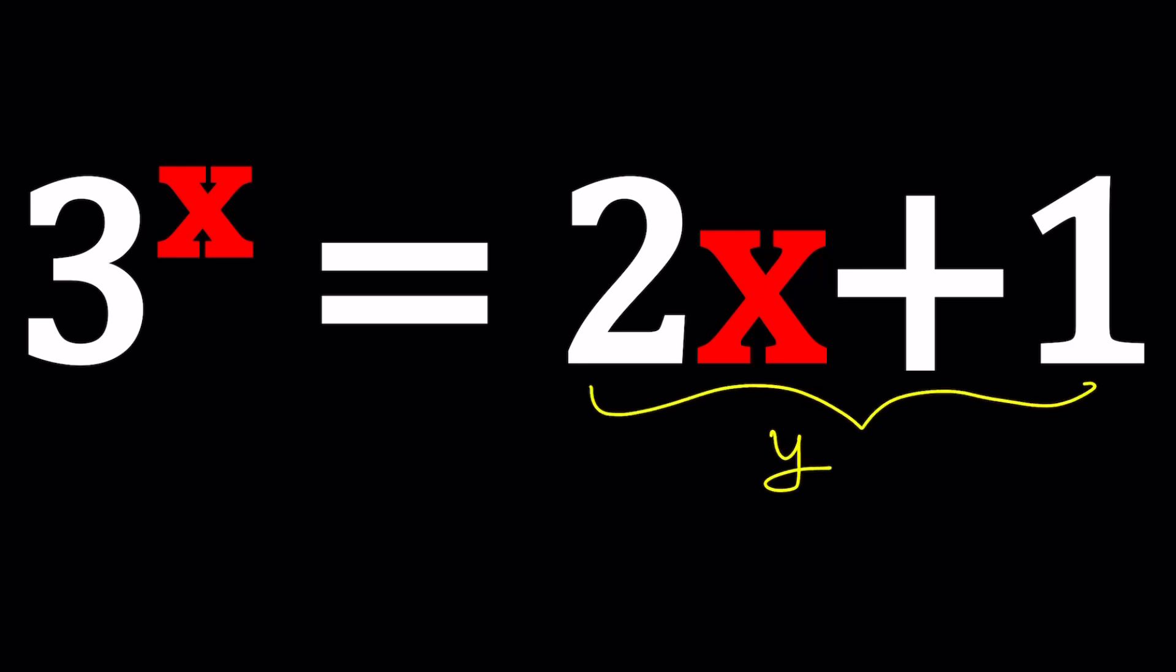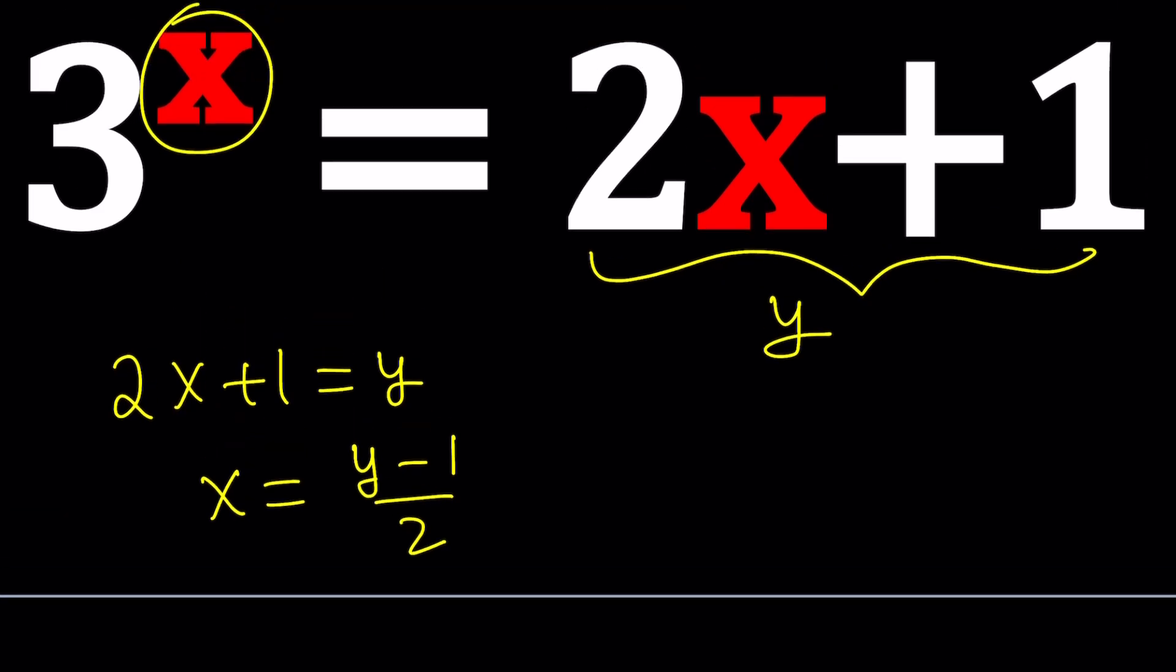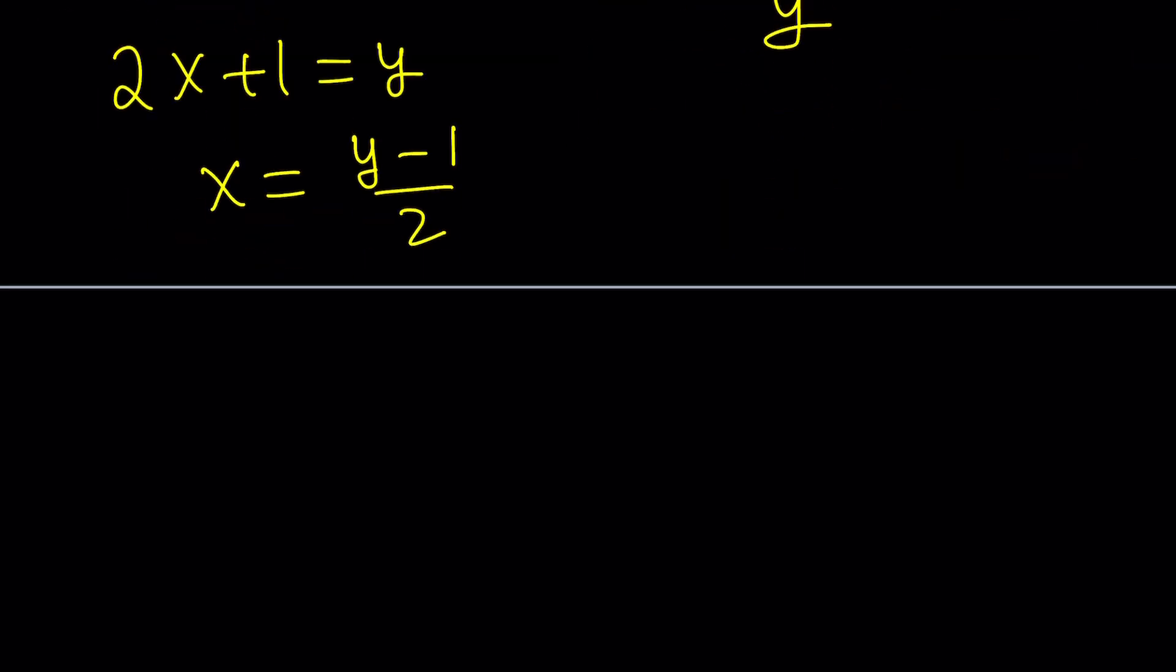But I'm going to go ahead and call this whole thing y, and don't ask why. From here, we get the following: 2x plus 1 equals y, which implies x equals y minus 1 over 2. So if you solve for x from this equation, these are also called literal equations, kind of like solving a formula for one of the variables. So now we can go ahead and plug that in here on the left, and that gives us 3 to the power y minus 1 over 2 equals y.